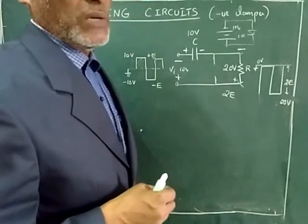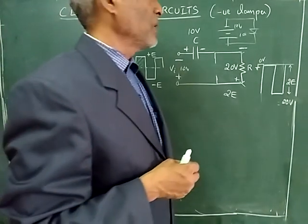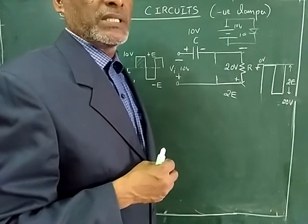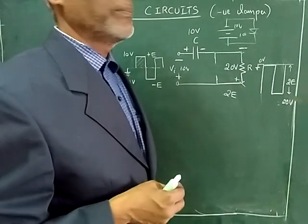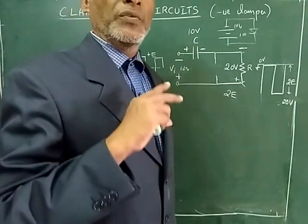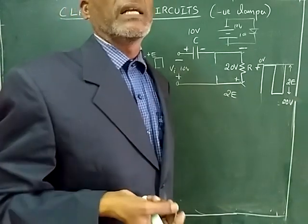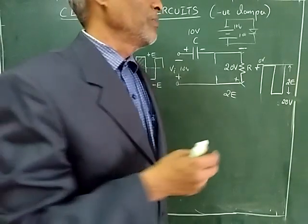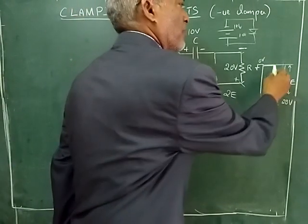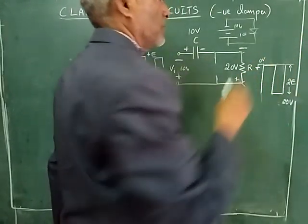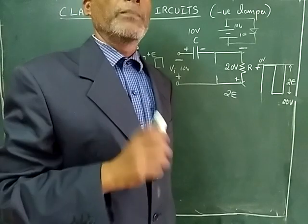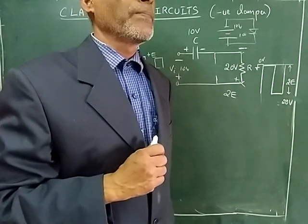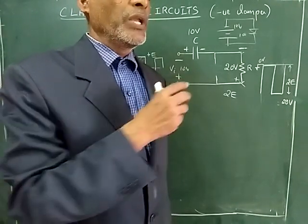This is the basic working principle of a clamper circuit. This is a negative clamper. If you reverse the direction of the diode, you will get the waveform shifted in the positive direction.